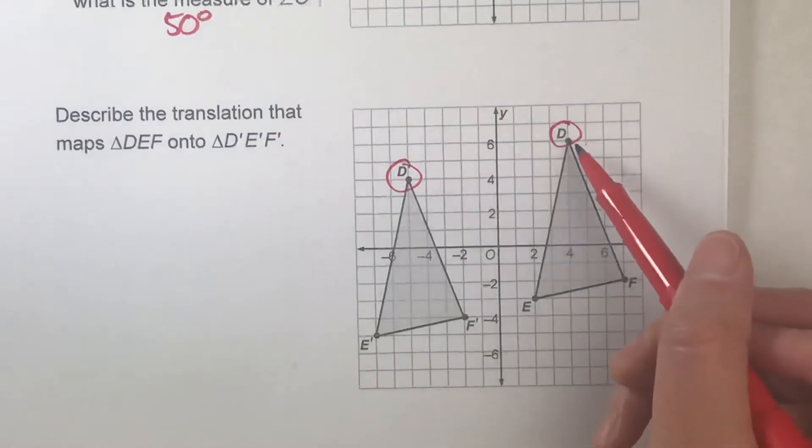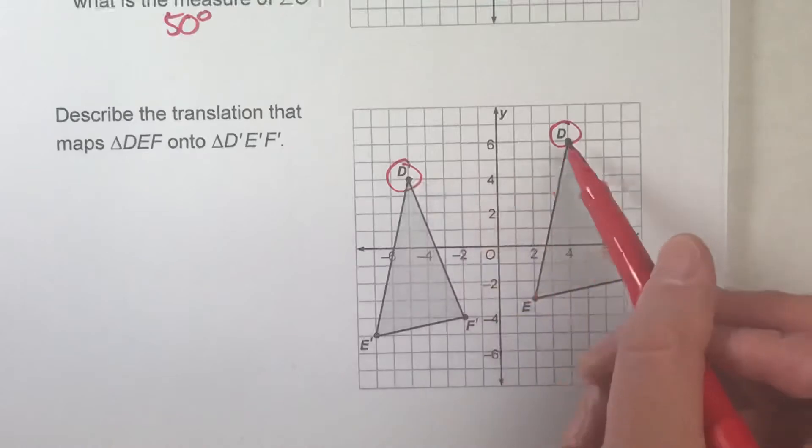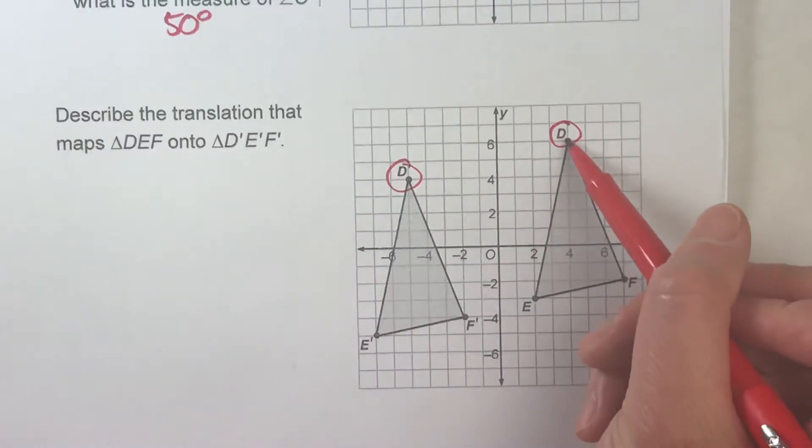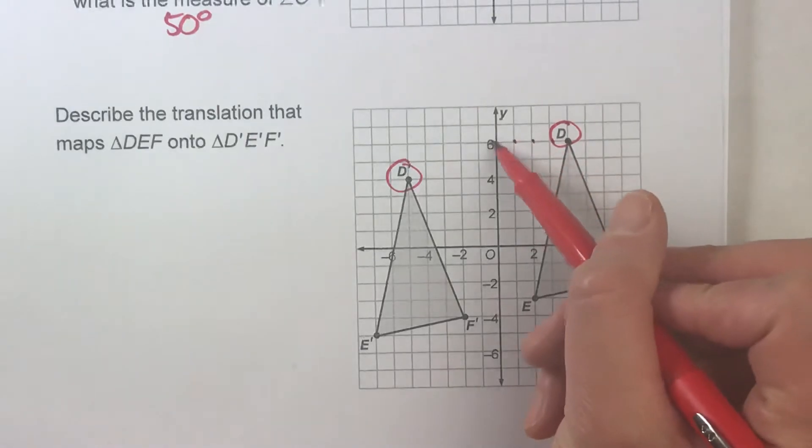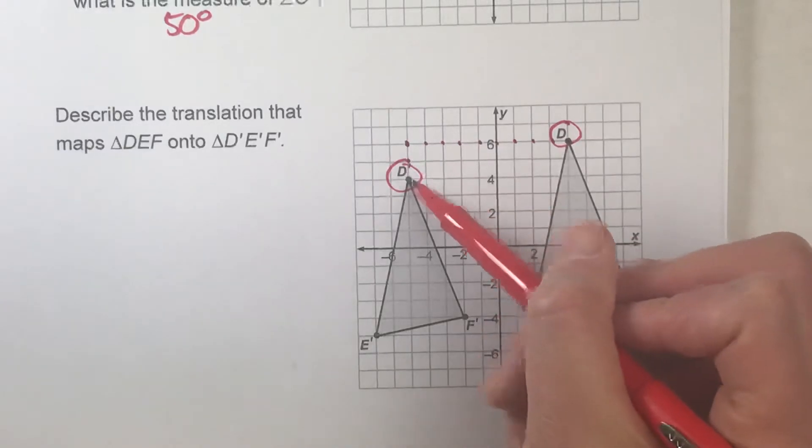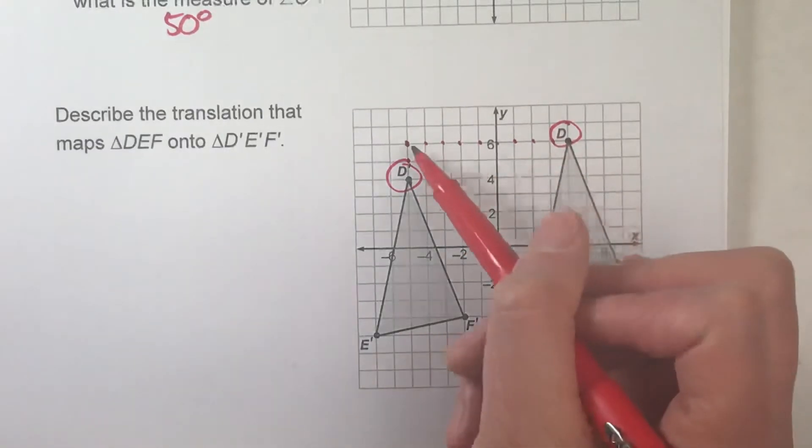So all we have to do is count how far and in what direction we went. So from D to D prime, notice it's going to the left—1, 2, 3, 4, 5, 6, 7, 8, 9. And down—1, 2. So it went 9 left, down 2.